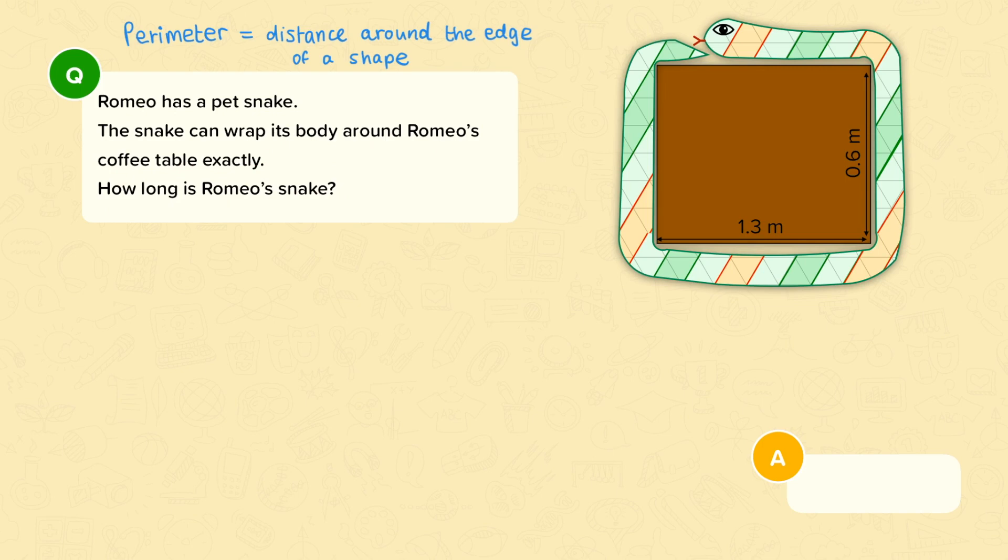Now this word exactly tells you that the snake wraps around the table without overlapping itself and without leaving any gaps. So the length of the snake will be exactly the same as the perimeter of the table. So this is a perimeter question even though it doesn't say so in the question.